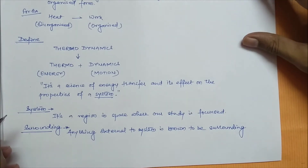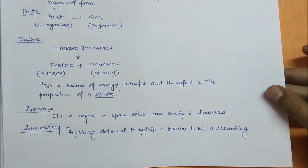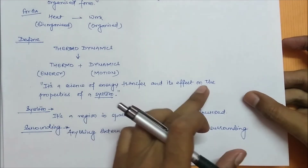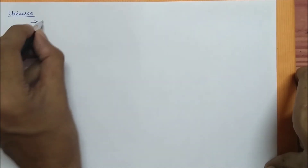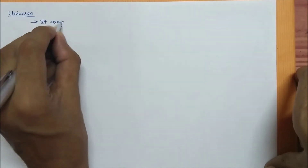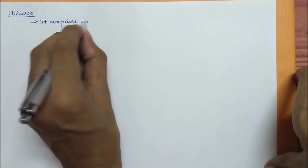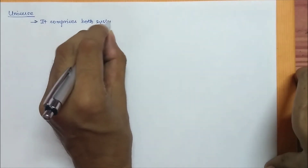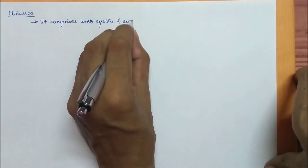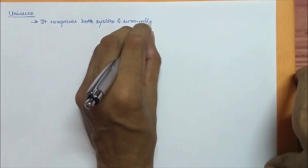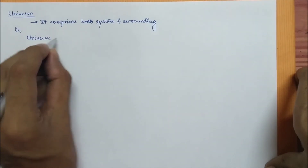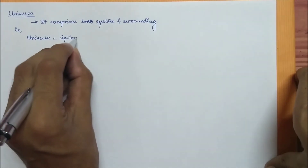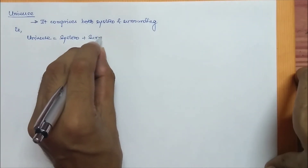Now another term is universe. The universe comprises both system and surrounding. That means we can say: universe = system + surrounding.